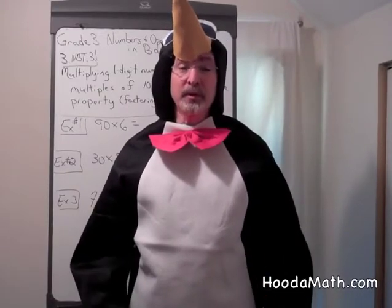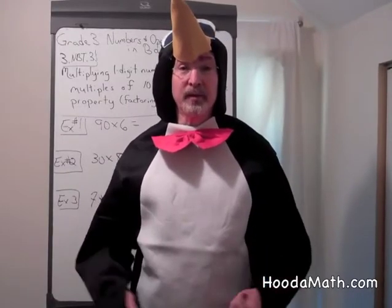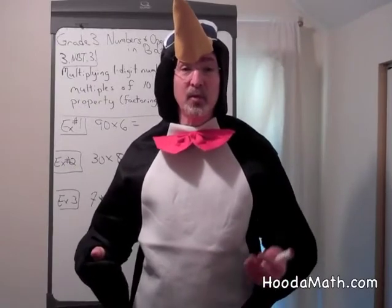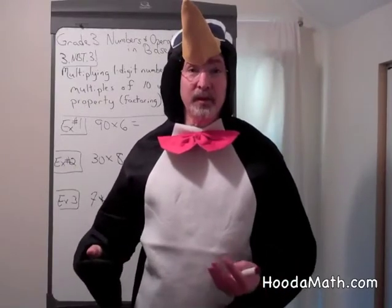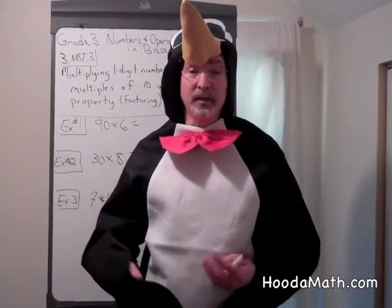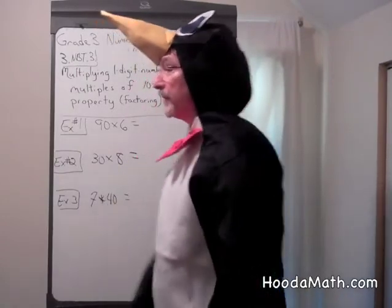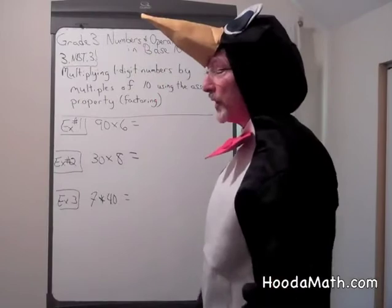Even rarer than albino penguins are penguins that are all black. They have the same disadvantage when seen from below. They contrast with the bright sky and can be seen more easily. That's more vulnerable to predators.